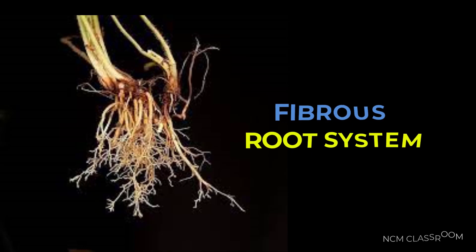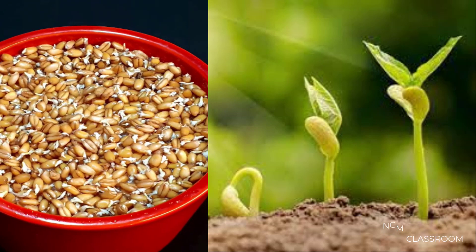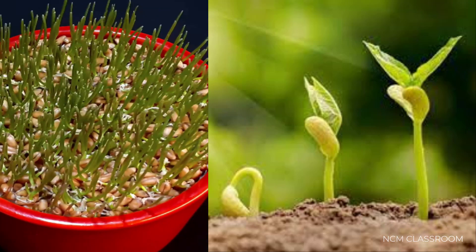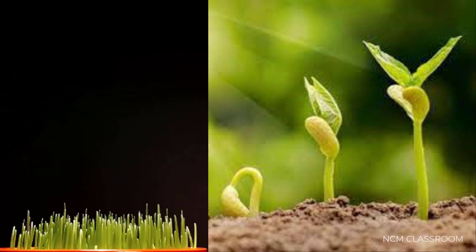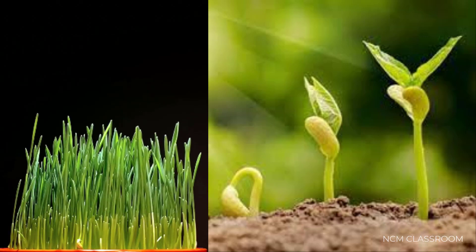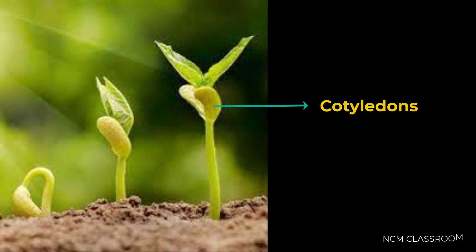And fibrous roots - these fibrous root systems show a bunch of roots. Now let us see how the seeds are germinating. Take seeds and sprinkle some water on the soil and sow them. After few days you will observe these sprouts. In the picture you can see the cotyledons - these are the first leaves of plant.